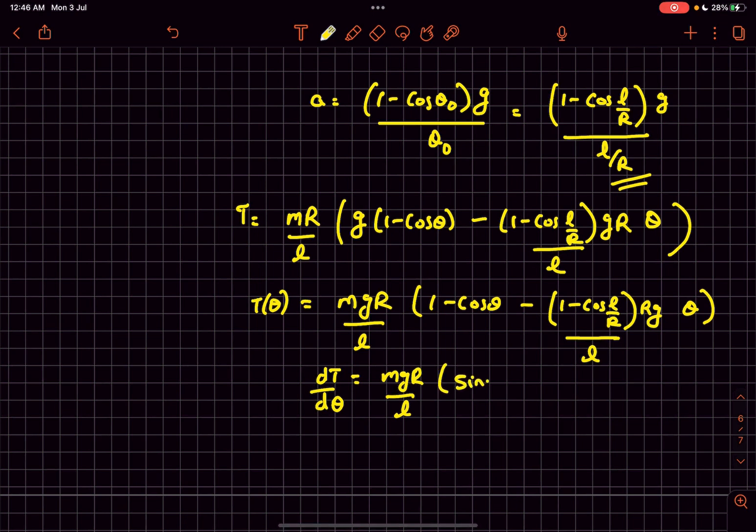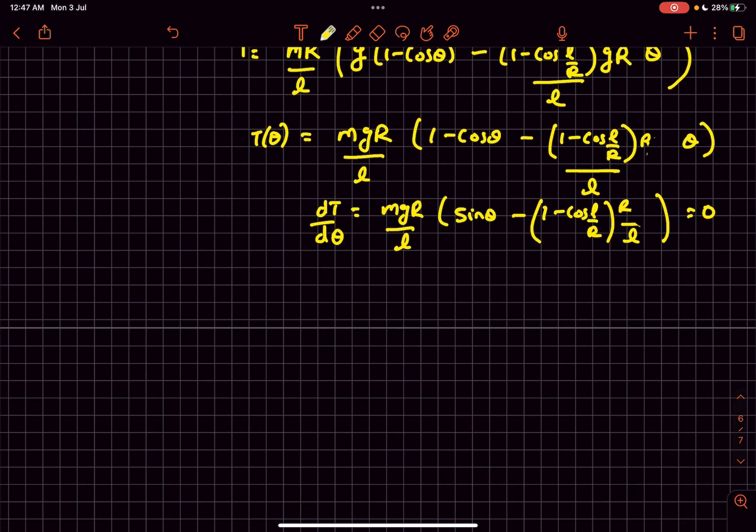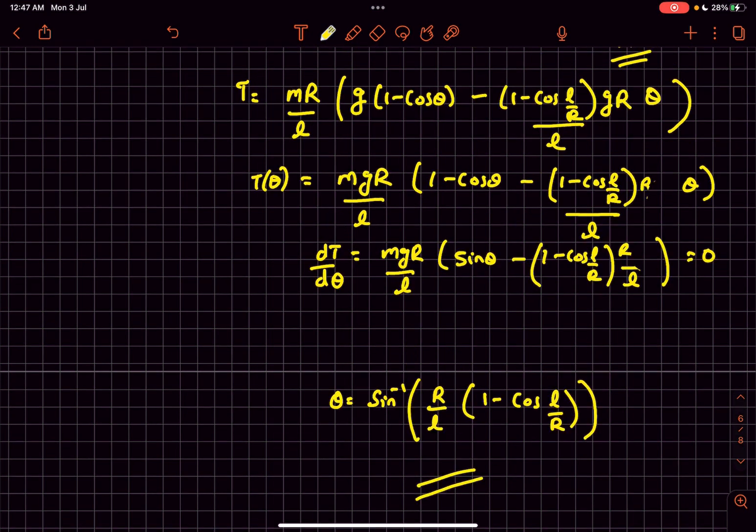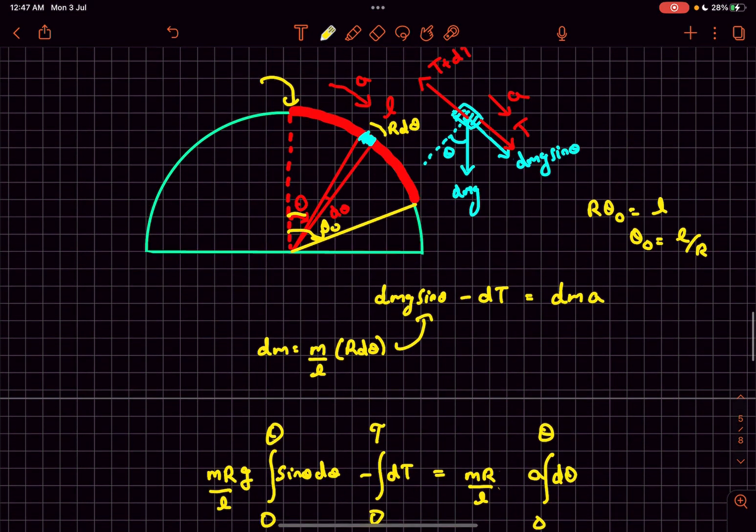Setting this equal to zero, we get theta equals sin^(-1)[(r/l)(1 - cos(l/r))]. This is our answer. At this theta from the vertical, the value of tension would be minimum.